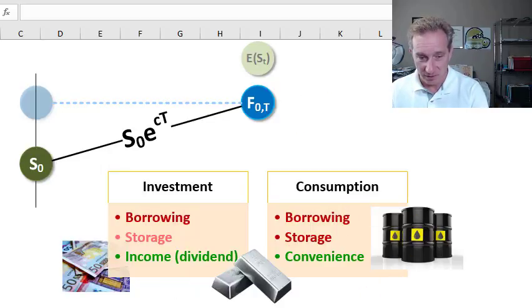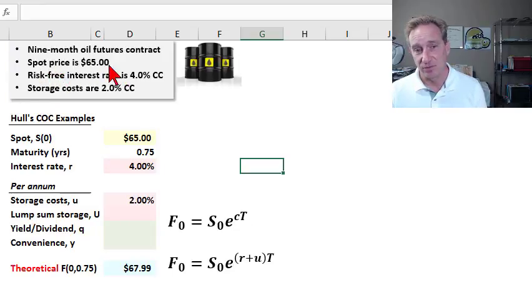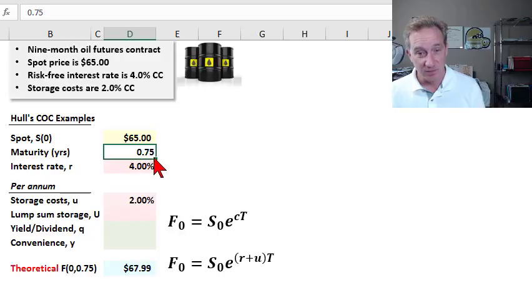So taking my crude oil as an example, and just imagining some assumptions that we're talking about a nine-month oil futures contract, where the spot price of crude oil is $65 a barrel. And I think that's roughly true today or approximately in the neighborhood. And we're at the maturity here, 0.75 years is nine months. And we'll assume an interest rate, a risk-free interest rate of 4%, as usual, always per annum as an input.